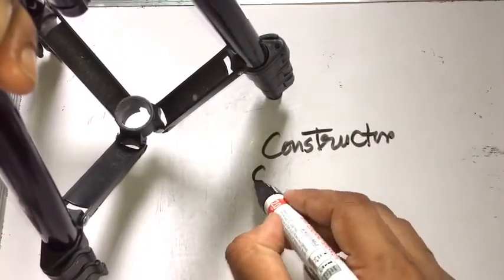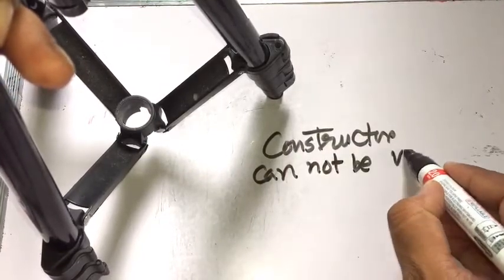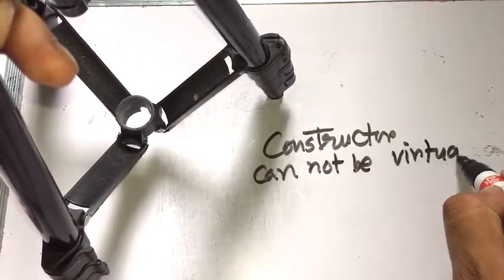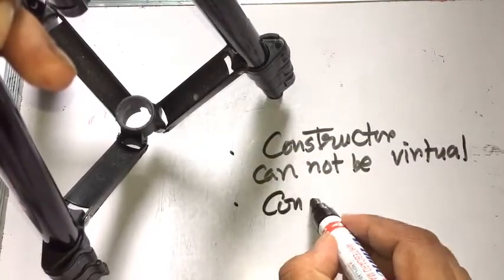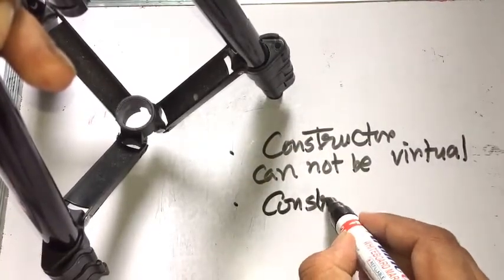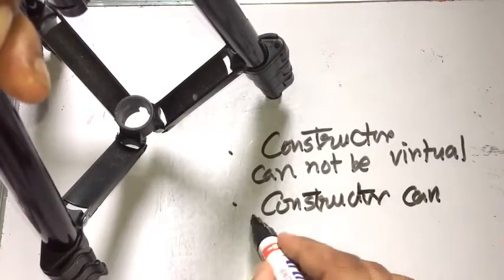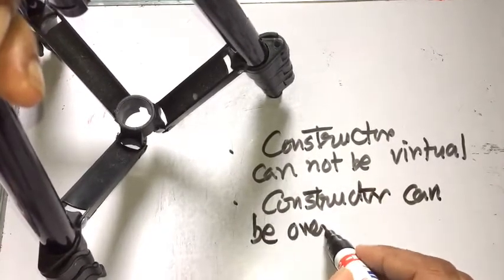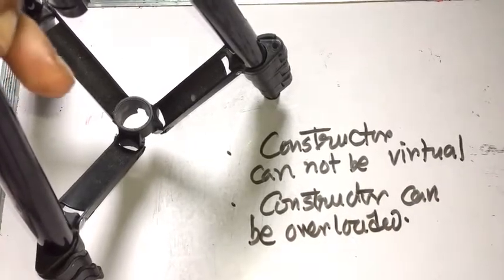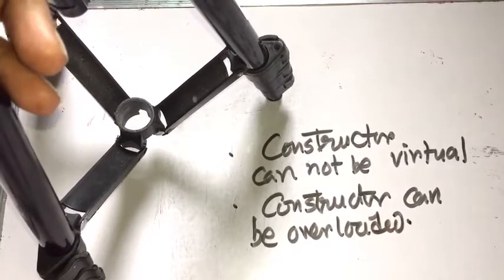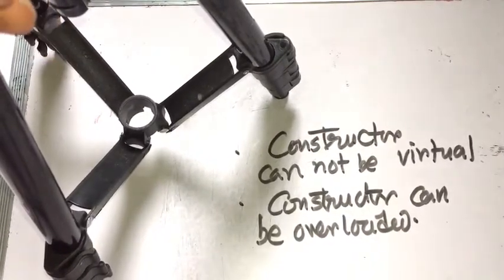Constructor cannot be virtual. Constructor can be overloaded. So these are the features or characteristics of constructor: the name is the same as the class name,